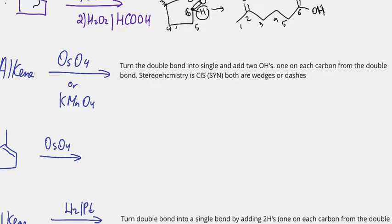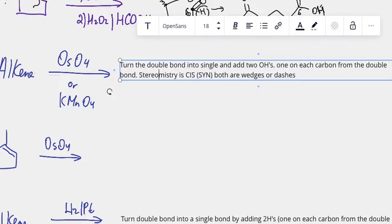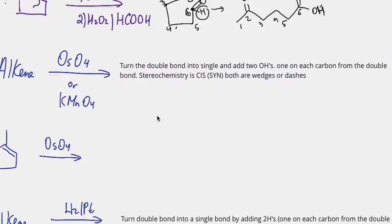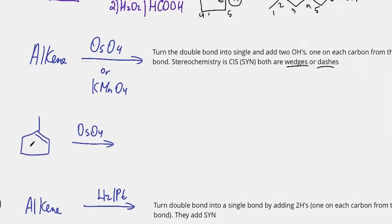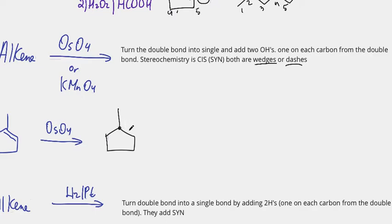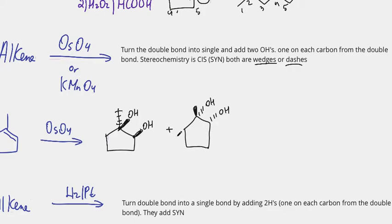The stereochemistry is syn — meaning both OHs will be wedges or both will be dashes. In this example, I have a double bond and OsO4. I turn the double bond into a single bond and add two OHs to the two carbons from the double bond. Since the OHs add syn, my product could be both OHs as wedges, or both OHs as dashes — so I make two products.